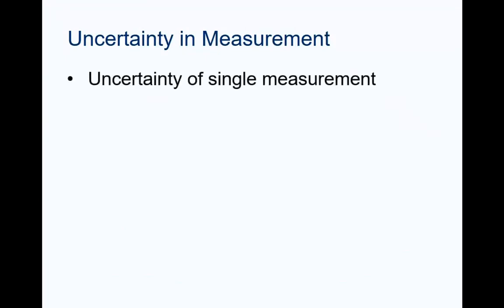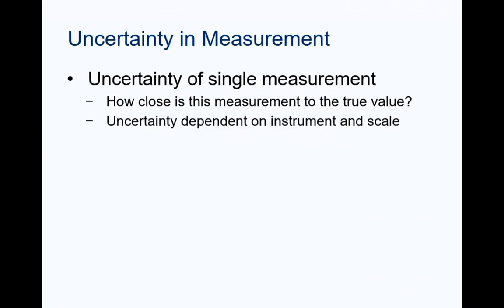In our previous activities, we have discussed uncertainty in the single measurement. The question has been, how close to the actual value is this particular measurement? We have answered this question by identifying a range within which we feel confident that the true value lies based on the scale markings of the measuring instrument. But, we can use repeated measurements of the same quantity to get a better estimate of the true value.